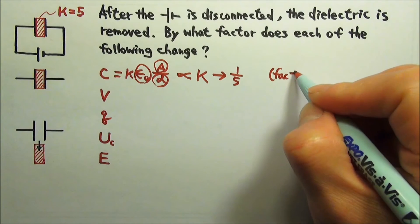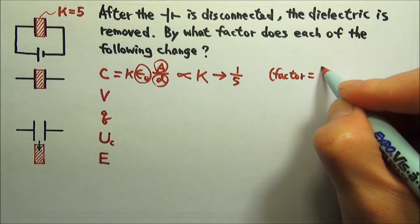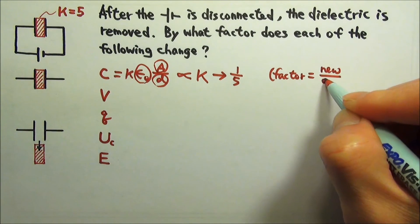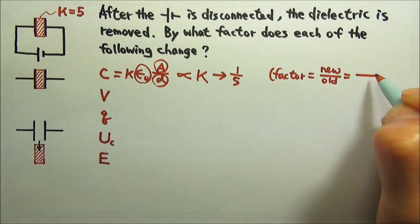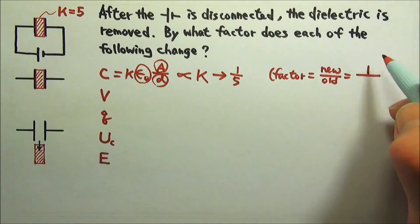Because the factor by which something changes is the new value divided by the old value. The new value for kappa is 1. The old value for kappa is 5.